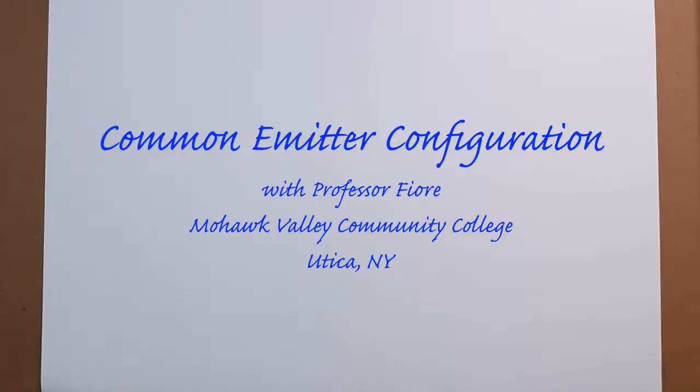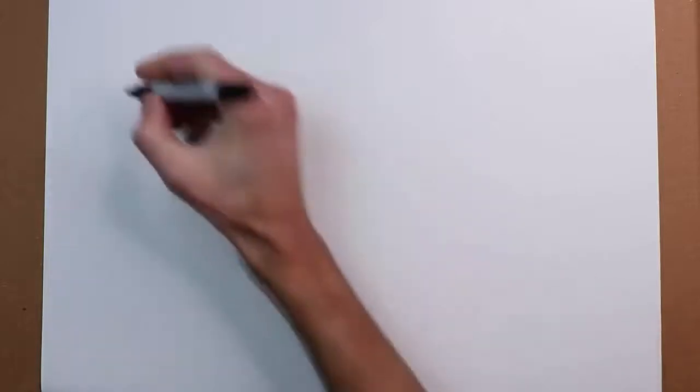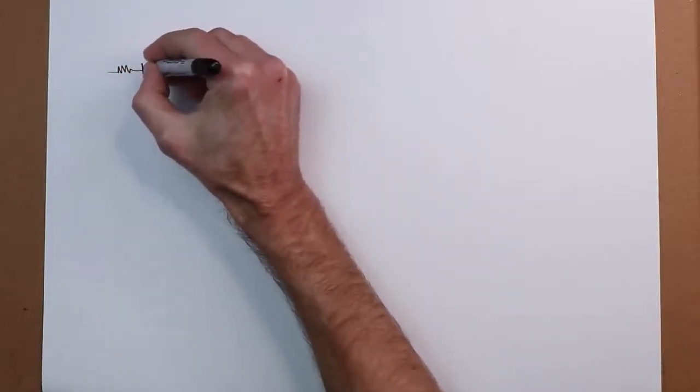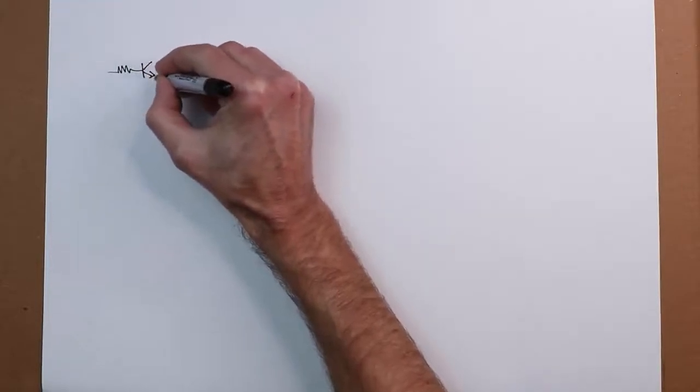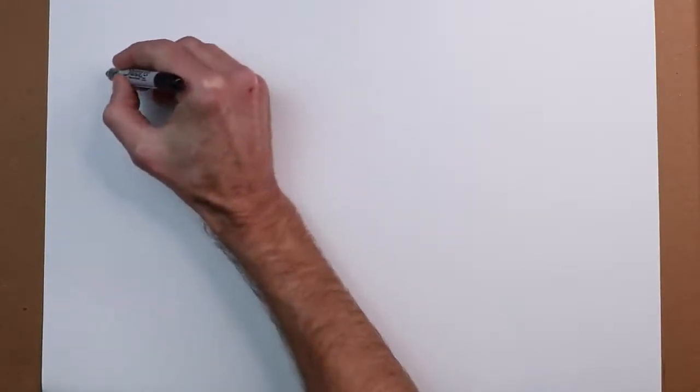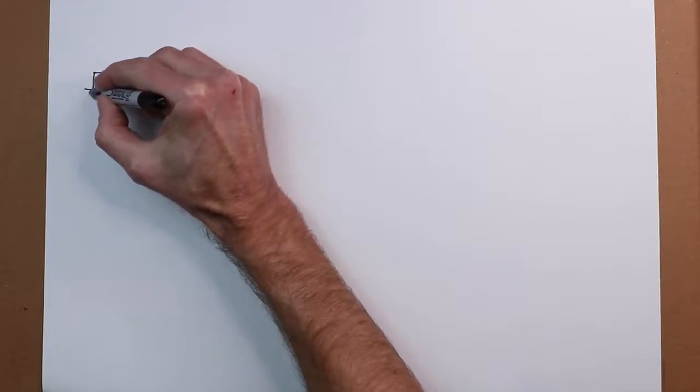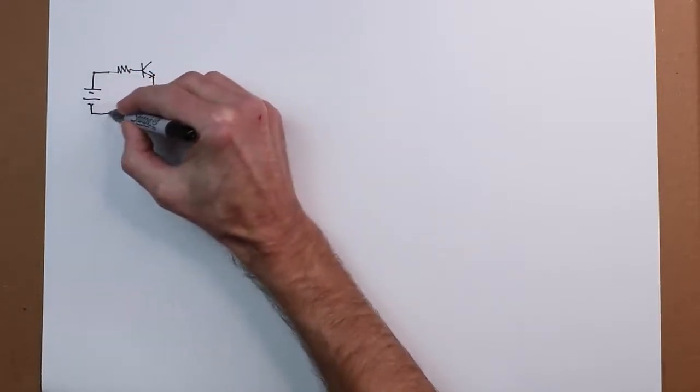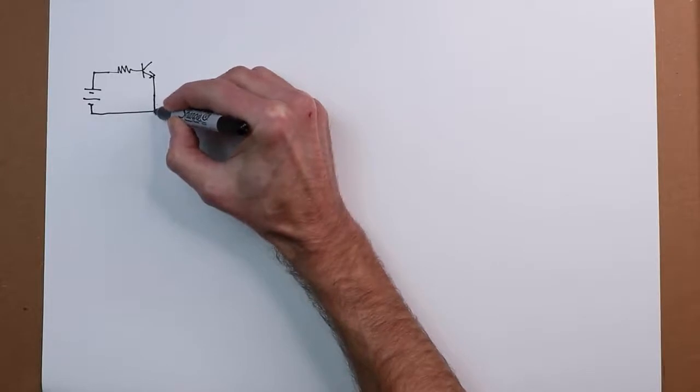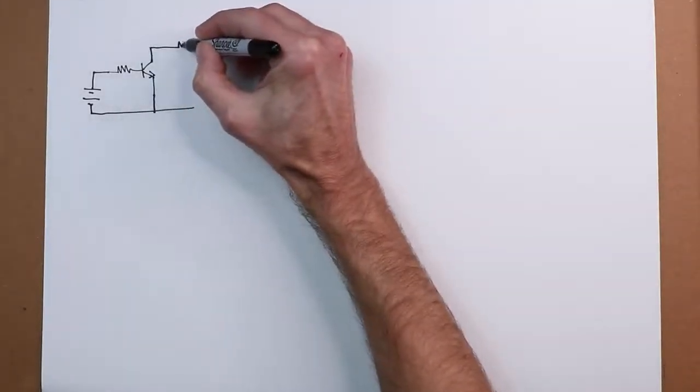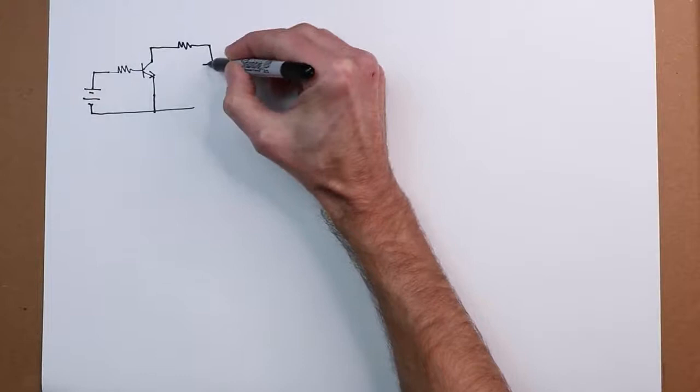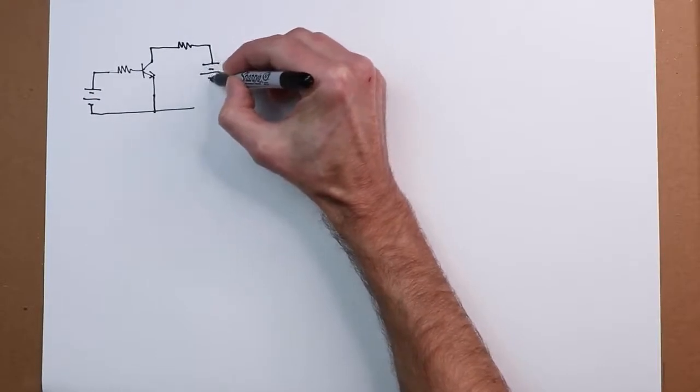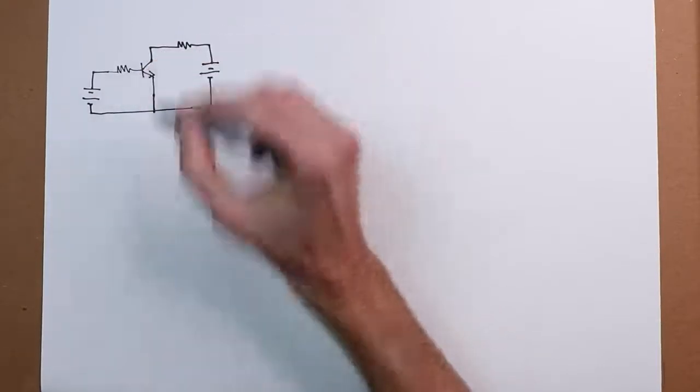Hello everyone. Today we're going to take a look at the common emitter connection, a very simple way of setting up our bipolar junction transistor. This is what we're going to be looking at. Here's our transistor. We've got a base resistor over here, a base power supply that will forward bias the base emitter junction, a collector resistor, and a collector power supply which will reverse bias the collector base junction.